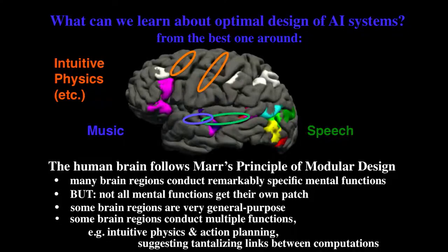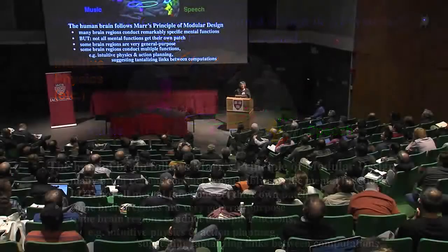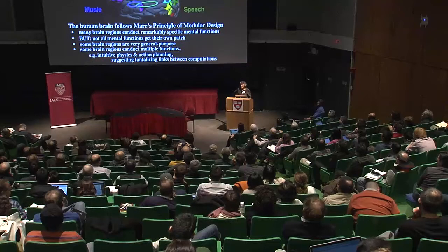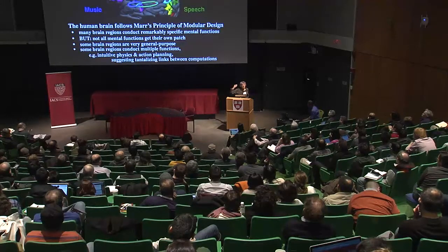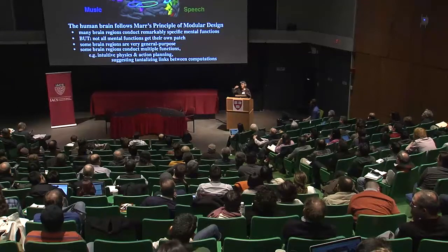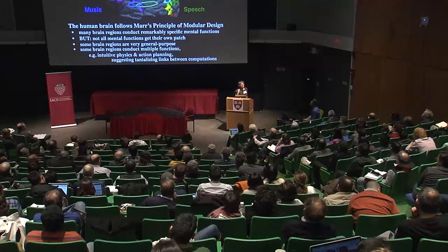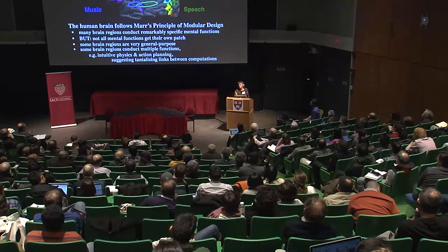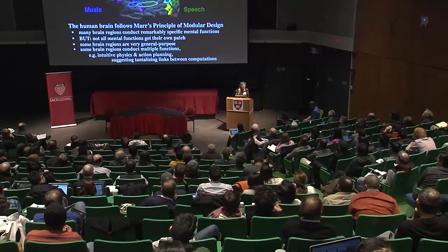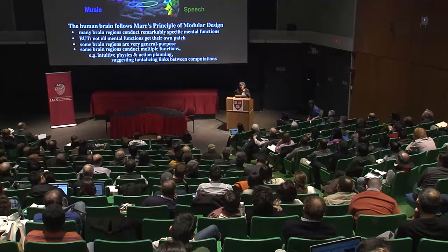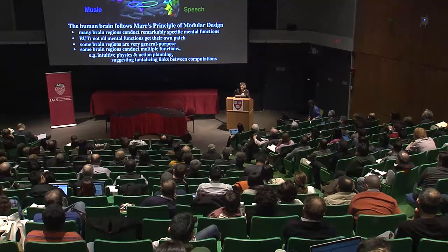I'm out of time. In case you want to ask about it: I had a whole other mini-lobe of the talk showing recent computational results suggesting that the original reason I supposed why we might have these brain specializations — namely that each is conducting a computationally distinct problem — might not be the right reason, from some modeling results. But I'll stop there. Thank you.